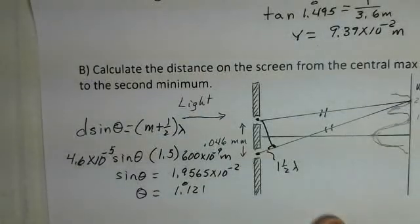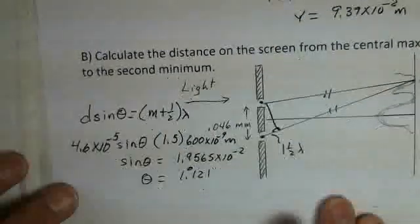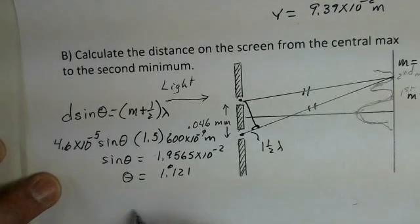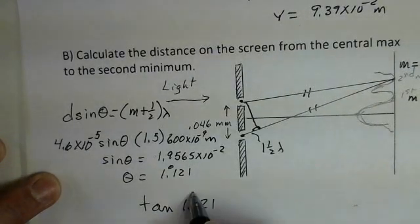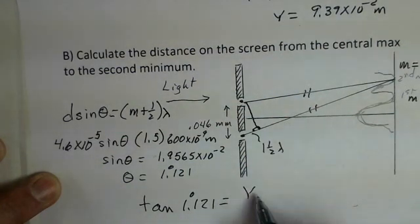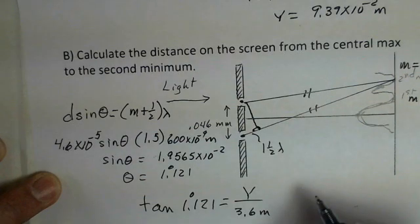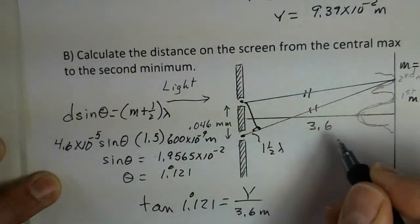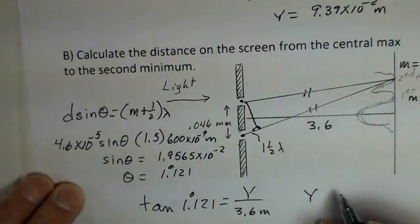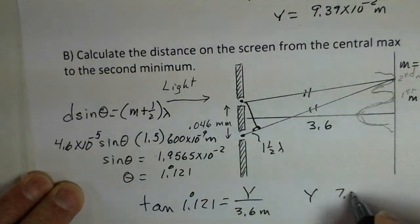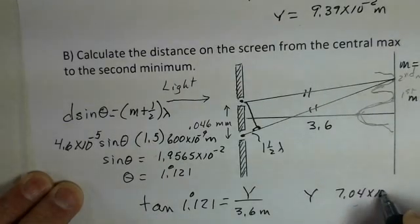So that's our angle. In the same way, we use the tangent calculation to tell us where we are on the screen. So I'd have tangent of 1.121 degrees equals this y now for the minimum. 3.6 meters is still our separation of slit to screen. Try this calculation on your own. I came up with 7.04 times 10 to the minus 2 meters.